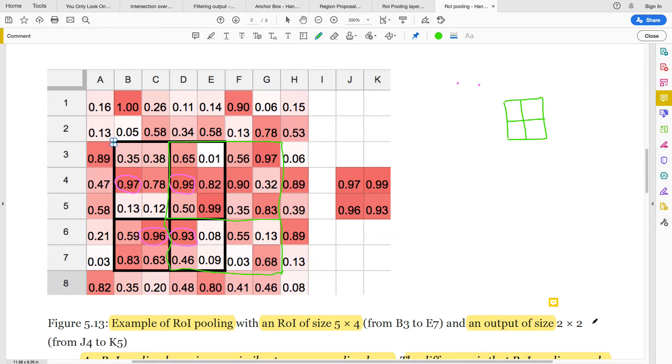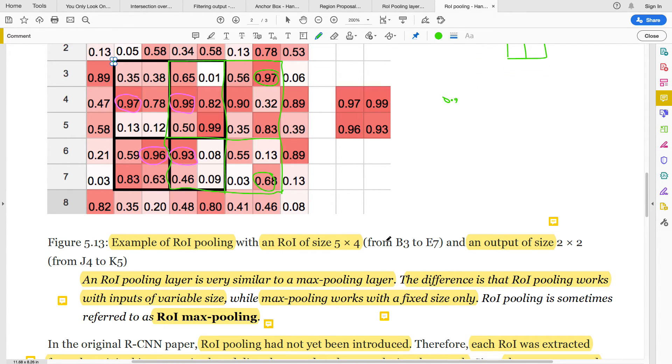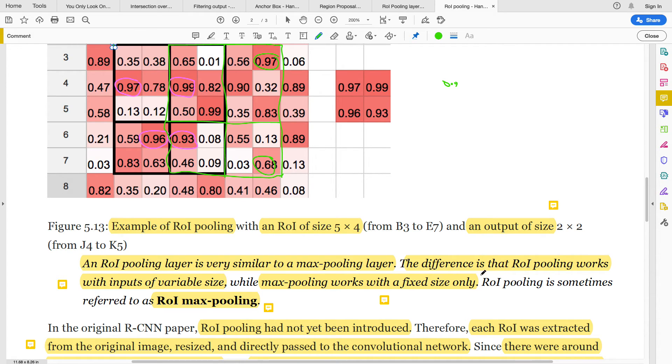It's 5 by 4, then I will divide it again based on my output size which I want it to be 2 by 2. Some of them will be 3 by 2, some will be 2 by 2. I will take the max of this place which is 0.99, I will take the max of this place which is 0.97, I'll take the max of this place which is 0.93, and the max of this place which will be 0.68. By the time I do that, I'm still going to get this fixed size of 2 by 2.